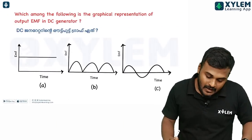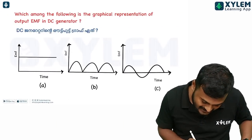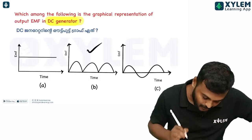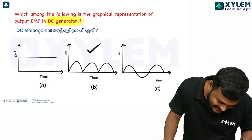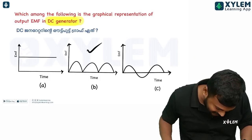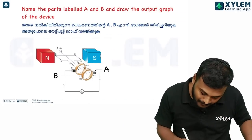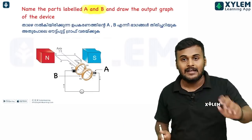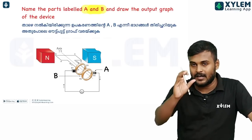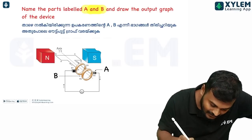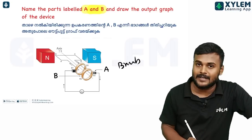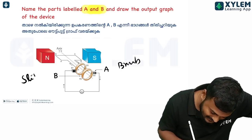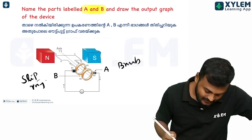Which of the following is the graphical representation of a DC generator? The DC generator output is option B. Now, name the parts labeled A and B. This device is an AC generator. The brush and the ring — the AC generator uses a slip ring.